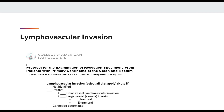This is an example of a CAP protocol for a resection specimen for primary carcinoma of the colon and rectum, illustrating the elements for the pathologist to check off for lymphovascular invasion. Here you will see the small vessel and large vessel invasion options for this site.